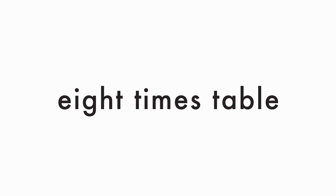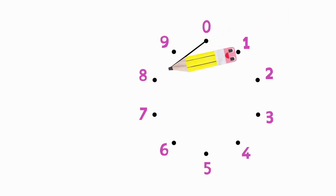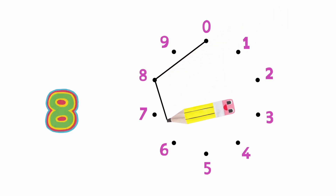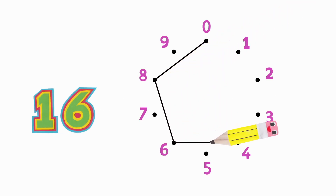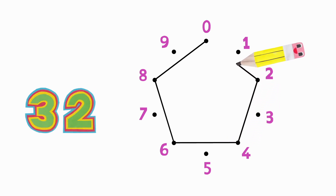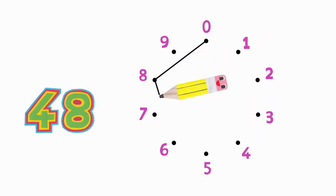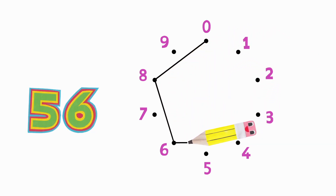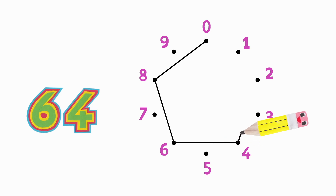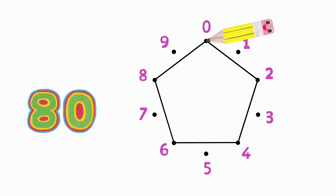Eight times table. Eight, sixteen, twenty-four, thirty-two, forty-eight, fifty-six, sixty-four, seventy-two, eighty.